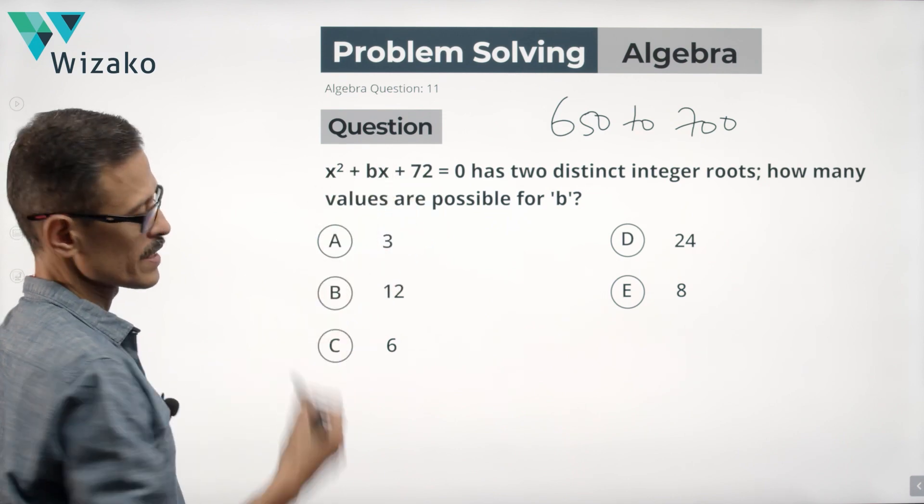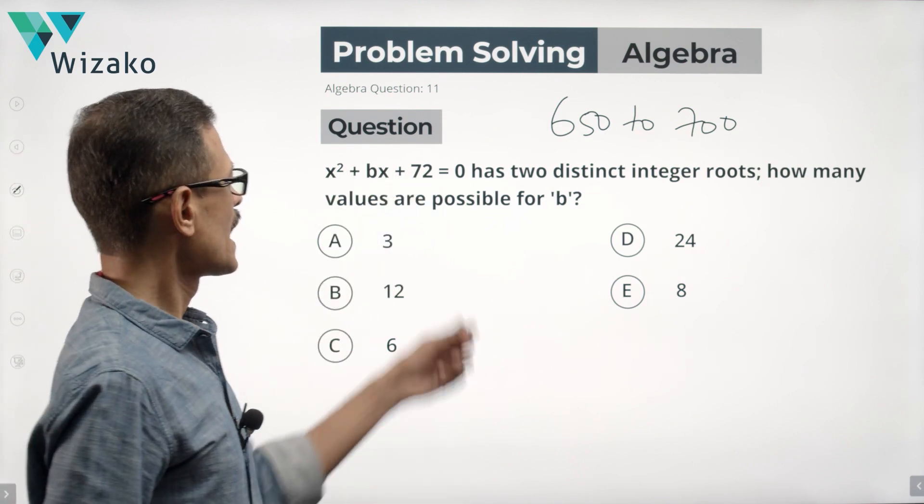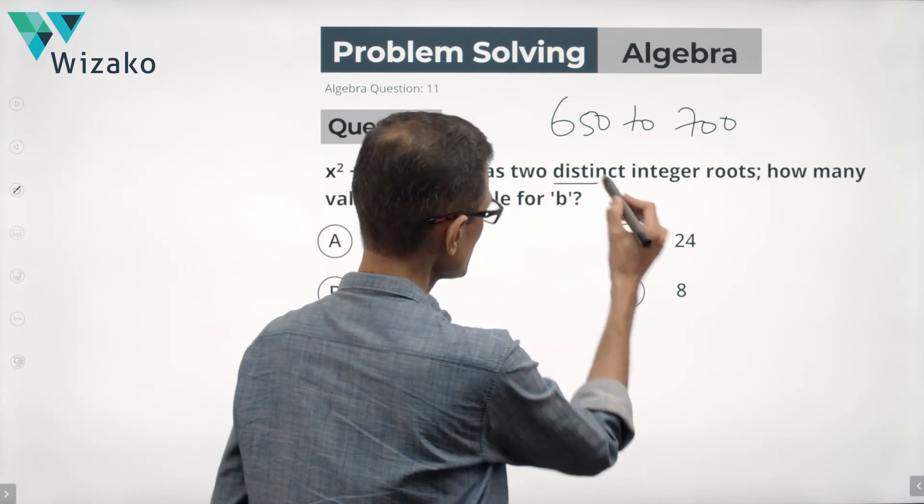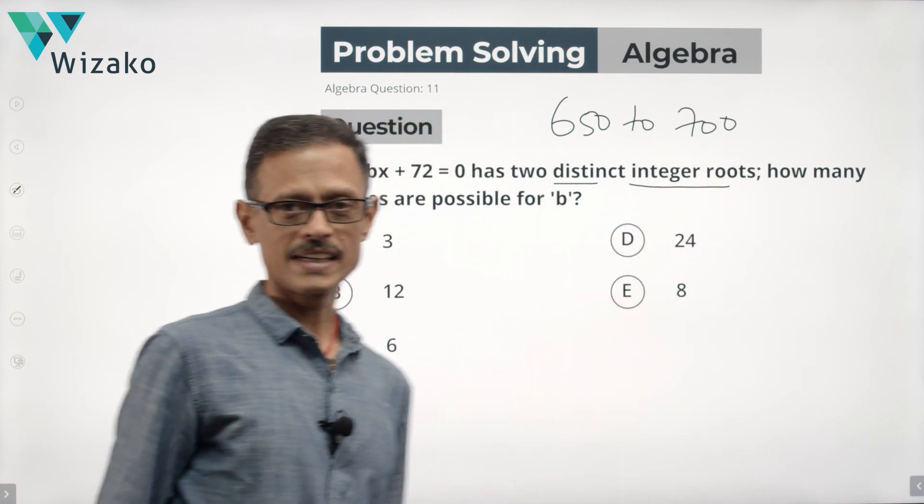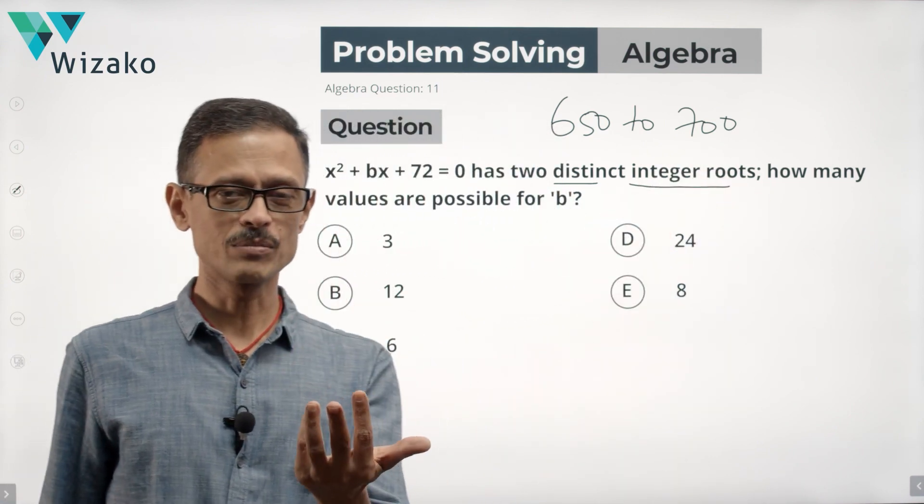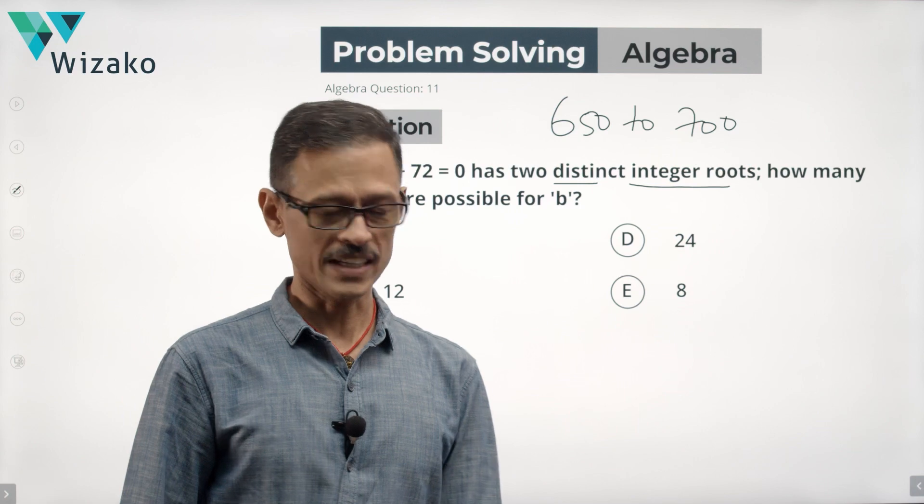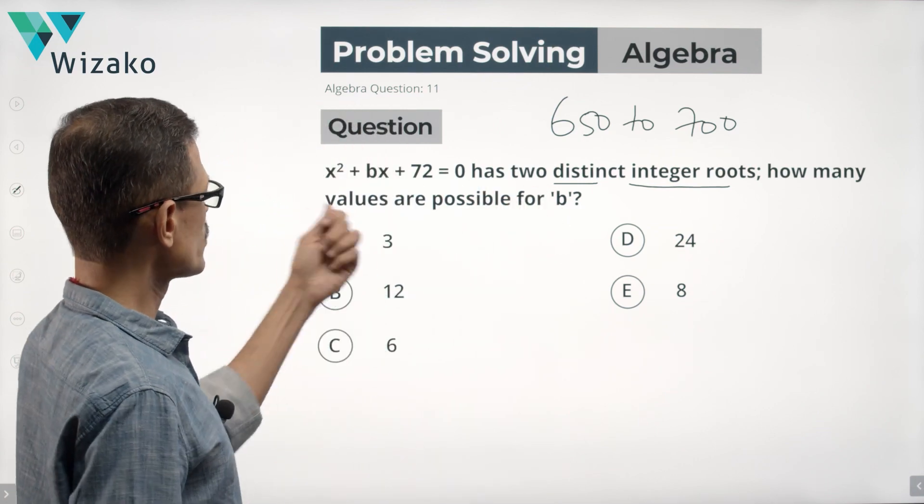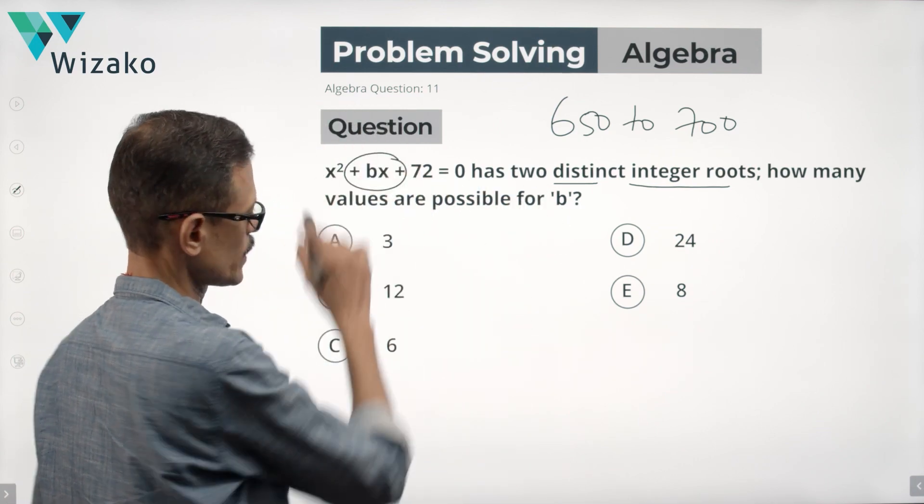X squared plus BX plus 72 equals 0 has two distinct integer roots. The roots are integers, which means they're obviously real numbers. Their distinct values is what it's saying. How many values are possible for B, which is what we need to find out.